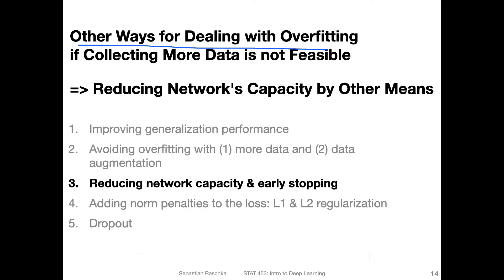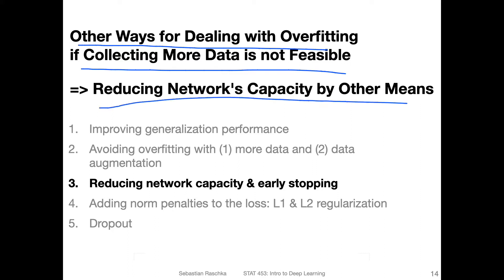Let's talk about some other ways for dealing with overfitting. For instance, if collecting more data is not feasible, and if data augmentation only gets you so far. One way would be reducing the network's capacity by other means. I decided not to do an extensive slide on that because we discussed several techniques already in that overview video I made with a mind map. The really most exciting topic here is dropout, so I don't want to spend too much time on other techniques.